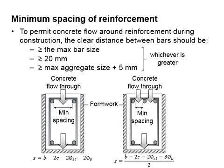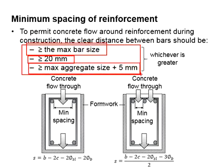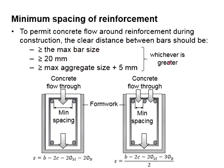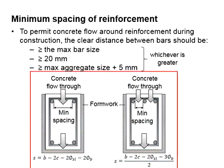Minimum spacing is required to allow concrete to flow through the reinforcement during casting. It is governed by three main aspects: the biggest bar size, at least 20 mm, and the maximum aggregate size plus five. The biggest value should be taken. The diagram shows the casting of two reinforced concrete beams.